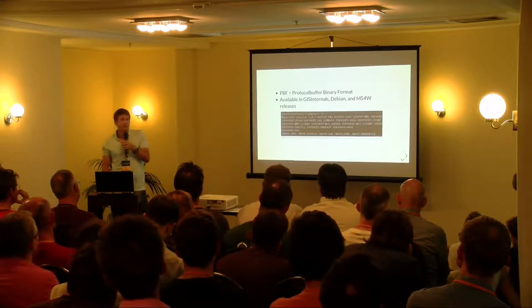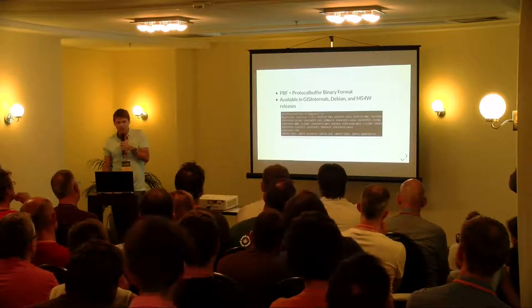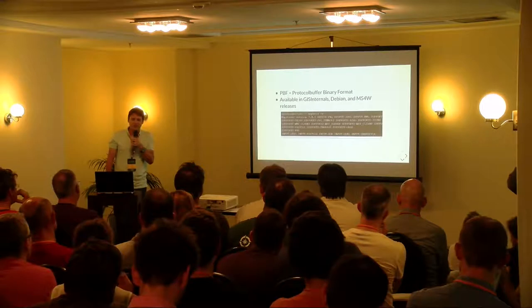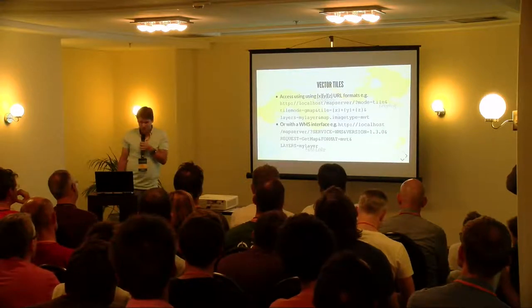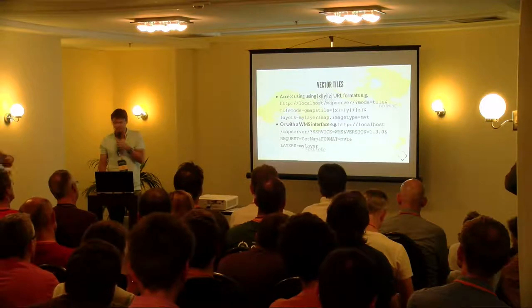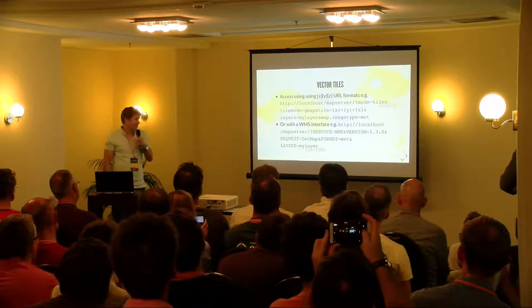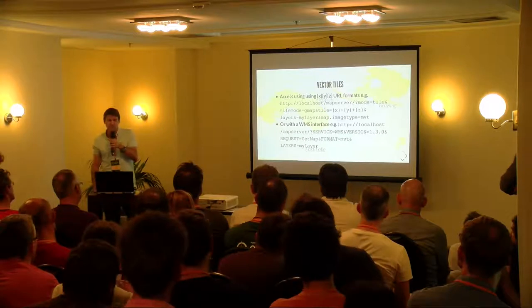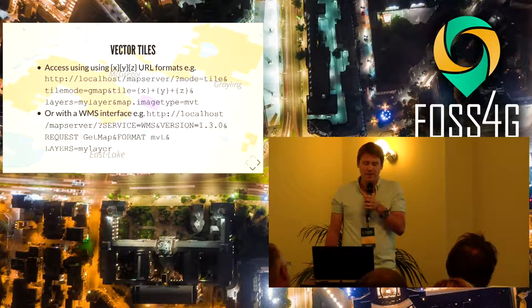If you want to check that your installed version of MapServer has vector tile support, you can run mapserv -v from the command line to see everything that's supported. You're looking for 'supports PBF' — the protocol binary format. All the main MapServer distribution channels now have the vector output integrated. To access vector tiles, you can use the Google XYZ URL format — passing in your zoom, X, and Y to get a tile back. But with MapServer you can also access them via a WMS interface, which means you can cache your vector tiles using MapCache directly, and you can also apply WMS filters to your vector tiles.